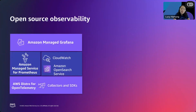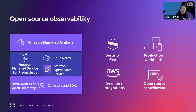We also understand that a lot of folks out there are using open source, so we have managed open source options. If folks are using Prometheus or Grafana, we certainly have a large community of customers using those, and we have those options available as well. A frequent question we get is: why do I need AWS managed services if I'm already using Prometheus and Grafana? Here are some of the reasons why AWS managed services provide additional capabilities or features.